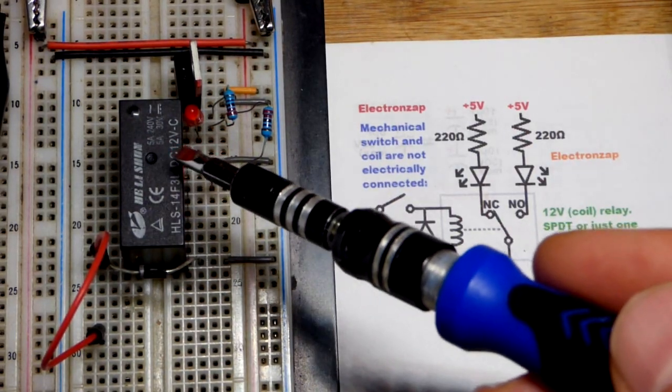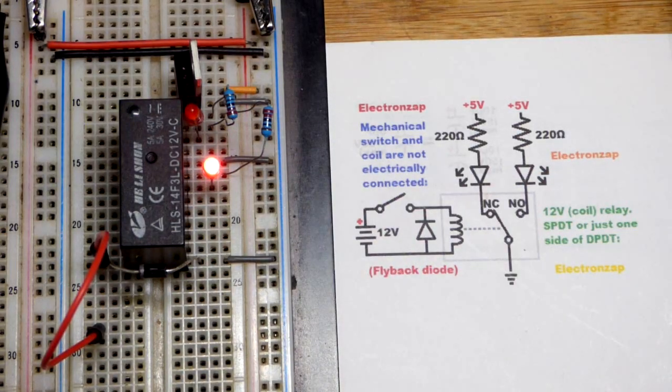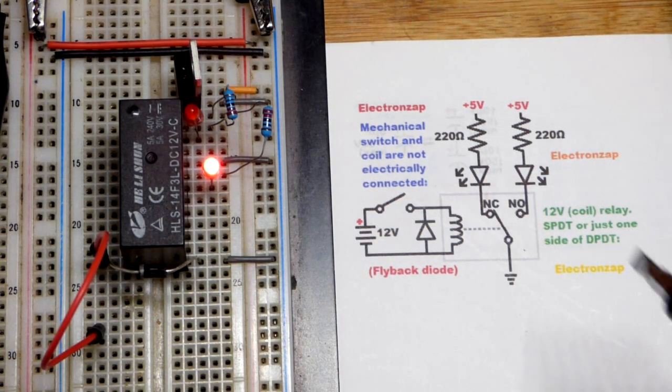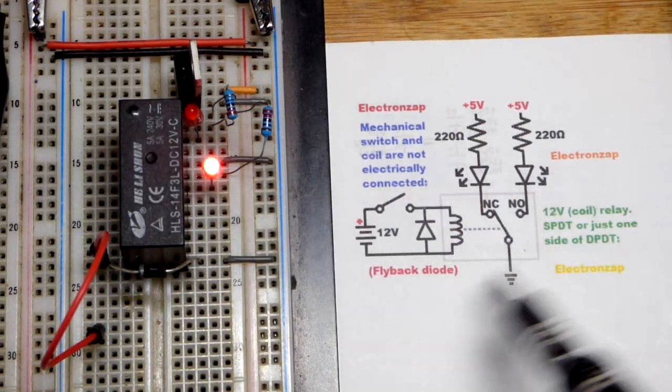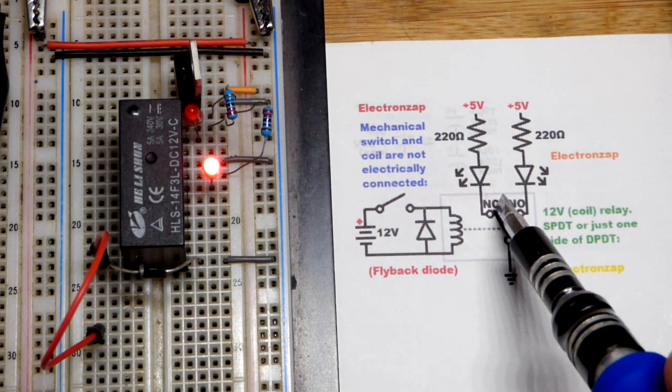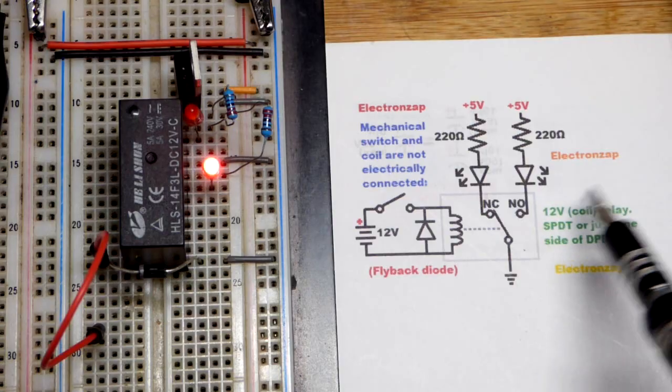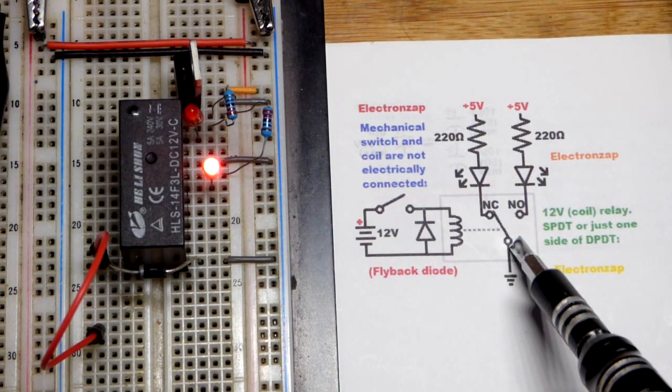There's actually two single pole double throw switches in there making the whole unit a double pole double throw switch. So there's two of these built into there but we're only using one. As far as this circuit is concerned we have a single pole double throw. There is a second pole for that double pole double throw that has two positions but we're not using it.